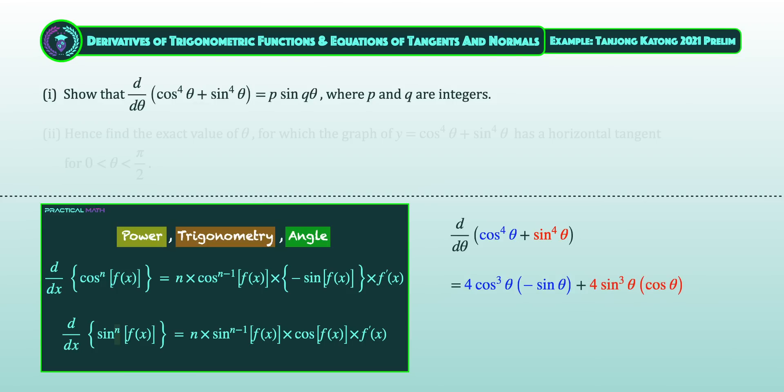First, we'll bring down the power of 4 to be a product and the original power will minus 1 to be 3. Next, differentiating a sine function will give us a positive cosine function. Lastly, we'll differentiate the angle of θ to give us a result of 1. We'll then simplify this derivative result by factoring out the common term of 4sinθ cosθ.